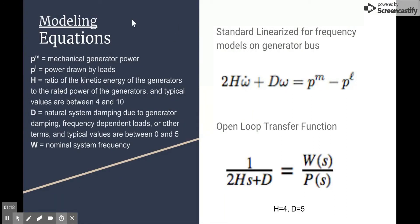Our system model has a couple of parameters. Basically, on the right side of our equation, we have the mechanical generated power, PM, subtracted by the power drawn by the loads. So essentially, this right side of the equation gives you the difference of these two powers, and that way it can be used to monitor the system. As you see, there's two coefficients, H and D, on the left side. H stands for the ratio of kinetic energy of the generators to the rated power, and these values are typically between 4 and 10. D refers to the natural system damping, or generator damping, and is typically between 0 and 5.